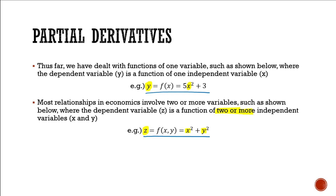Now in this example, we still have one dependent variable, z, but it's going to be responding to two or more independent variables, in this case just the two, x and y. Thus far, when we've been dealing with these single variable problems, we have been curious about how our dependent variable y is changing with respect to x. Similarly, when we have a function of two or more variables, we're curious about how z would be changing with respect to x and y. And this is where partial derivatives come in.